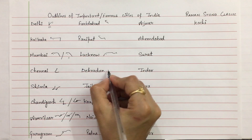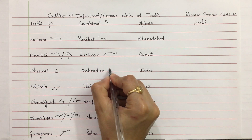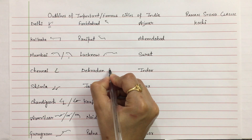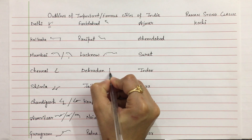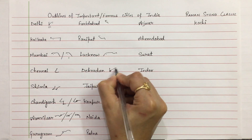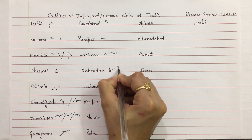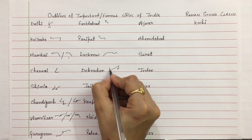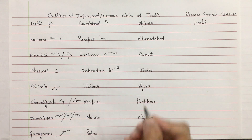Dehradun — on the line. D, Hay, Ray, D, and hook N. Dehradun.